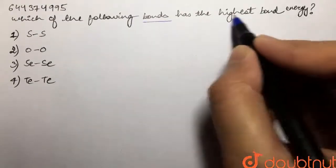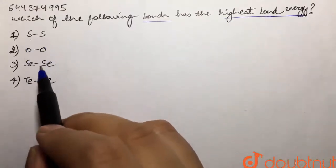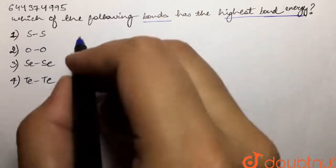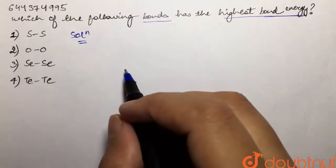following bonds has the highest bond energy? We are given sulfur-sulfur bond, oxygen-oxygen, selenium-selenium, and tellurium-tellurium. So we are given oxygen family and we are supposed to tell which of the following